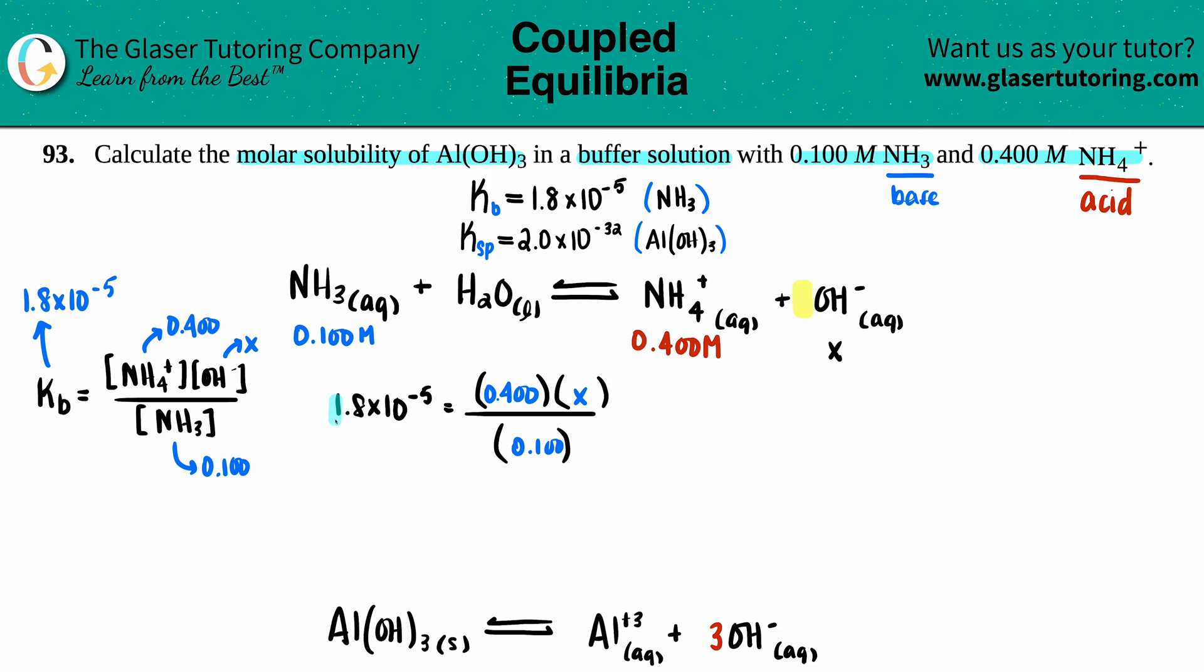Let's do some cross multiplication. This times by the 0.1, and then these two will just be by themselves. So 1.8 × 10⁻⁵ times 0.1 is 1.8 × 10⁻⁶ equals 0.400 times x. To solve for x, we're just going to divide by 0.4 on both sides.